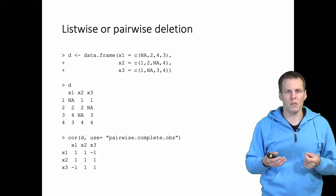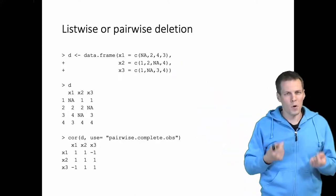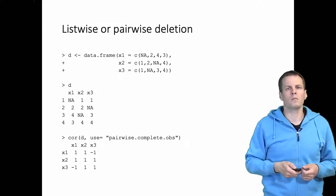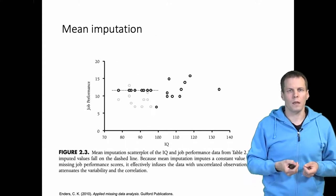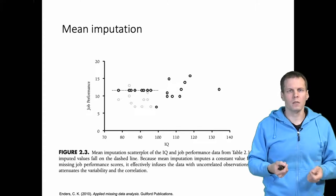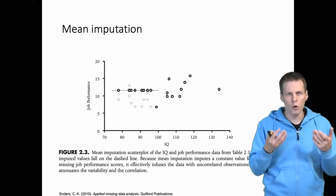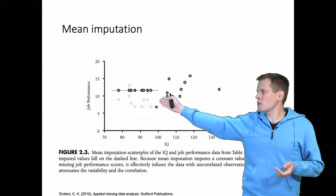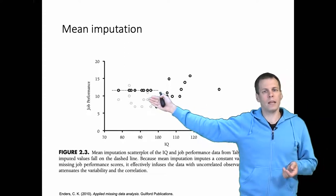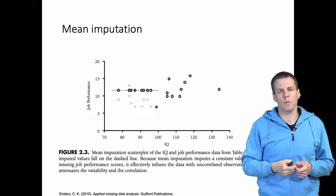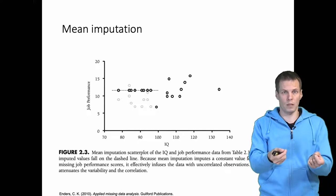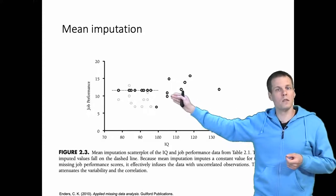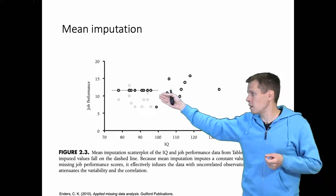If you must delete observations, list-wise deletion is probably a better alternative than pair-wise deletion. Moving on to other techniques — we can also impute or substitute data. The simplest possible way of imputing data, essentially guessing what missing values could be, is mean imputation. Instead of treating job performance values as missing, we make a guess that the best estimate for a missing value is the mean of the non-missing values, and simply substitute that mean for the missing values.